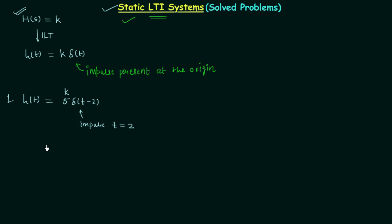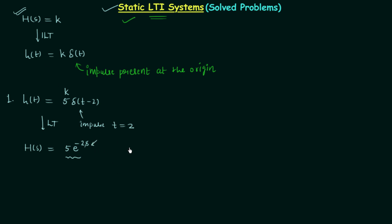We can further find the transfer function from the impulse response by taking the Laplace transform. It gives us H(s) = 5·e^(−2s). This is the transfer function of the given LTI system. We already know the transfer function should be constant for a static LTI system, but here it is not constant — it is dependent on frequency. Therefore this condition is not satisfied.